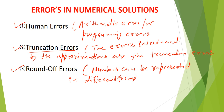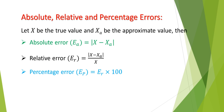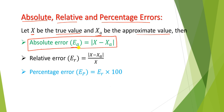The main error types are absolute error, relative error, and percentage error. Let x denote the true value and x_a denote the approximate value. The absolute error is denoted by E_a, where E_a equals the modulus of x minus x_a — that is, the modulus of the difference of the exact solution and the approximate solution. The relative error, denoted by E_r, is defined as the modulus of x minus x_a divided by x, or equivalently, absolute error divided by the true value.